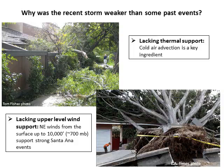You may wonder why this event, while noteworthy, was not as strong as some past events where trees and power lines were blown down — and these pictures are showing evidence of past events. While we had fairly strong surface pressure gradients with our current event, we were lacking the thermal support and lacking upper level wind support. And as we discussed earlier, both of these things are important ingredients to give us the stronger Santa Ana winds.